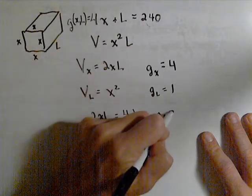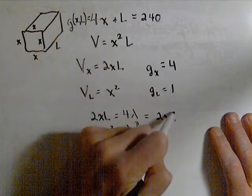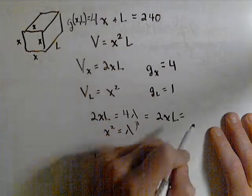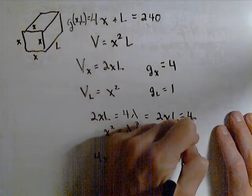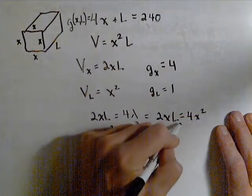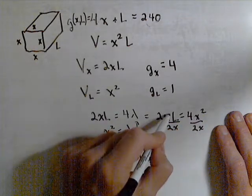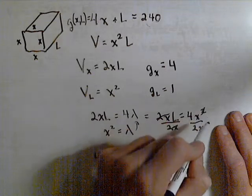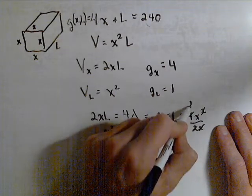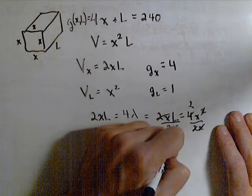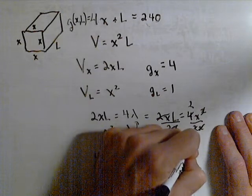We have 2xL equals 4x squared. So let's divide both sides by 2x. That does eliminate our answer of zero but then we wouldn't have a box so we're not too worried about it. That gets rid of that and this will become a 2. So what we get is that L equals 2x.